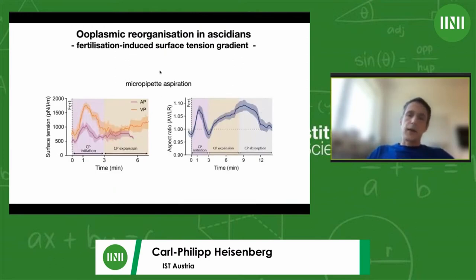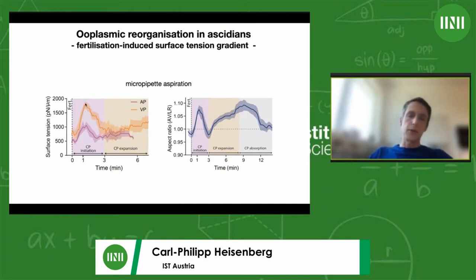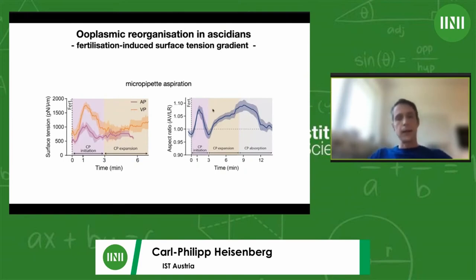She then wanted to understand how cortical actomyosin tension evolves within the oocyte during fertilization and contraction pole formation. She measured cortical tension using micropipettes at both the animal pole and the vegetal pole. During initiation there is a very strong increase in tension at the vegetal pole and less so at the animal pole, leading to a strong buildup of a tension gradient from animal to vegetal. Presumably, upon fertilization during the initiation phase, this leads to breakage of the cortex and flow of the cortex downward toward the vegetal pole.